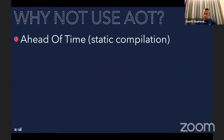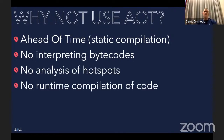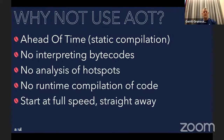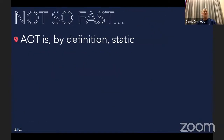Why not use ahead-of-time (AOT) compilation? This isn't new — it's static compilation like in C. You take the code, compile it, and it's done. There's no interpretation of bytecodes, no analysis of hotspots, no runtime compilation. It starts directly at full speed. GraalVM Native Image does that. Problem solved, right? Not so fast — it has some drawbacks.